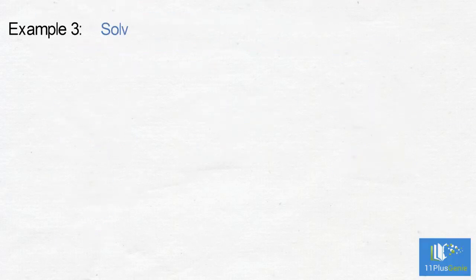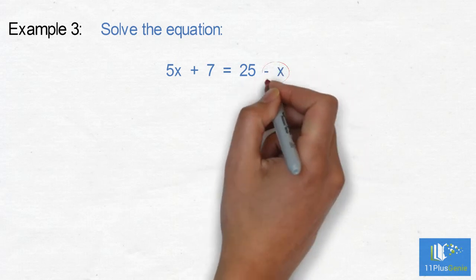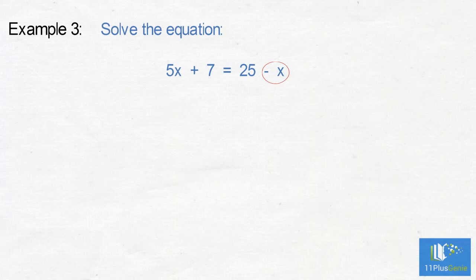Example 3: Solve the equation 5x plus 7 equals 25 minus x. We need to get the x's on one side of the equal sign. If we look at the right hand side of the equation we see that an x has been subtracted. To cancel this out we need to add an x. But what we do to one side of the equation we must do to the other side. We need to add an x on the left. We can now simplify this equation to 6x add 7 which equals 25.